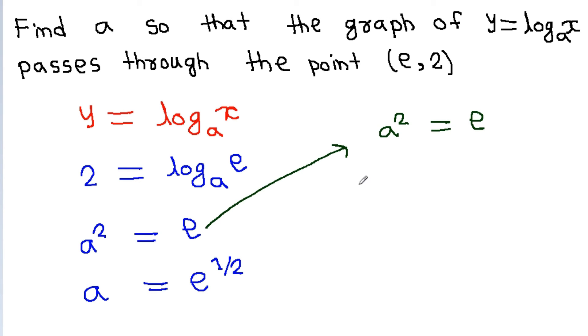If we take ln both sides then we get ln a square equal to ln e and it will become 2 times ln a equal to ln e is 1, or we get ln a equal to 1 by 2. From here we also get a is equal to e to the power 1 by 2.